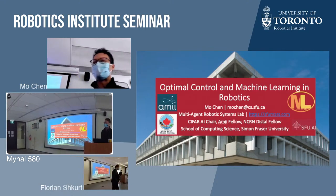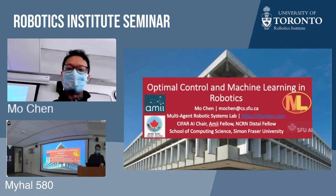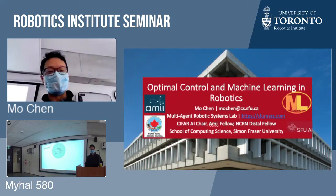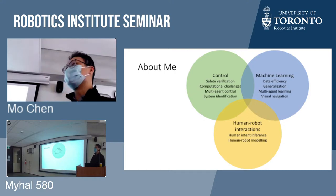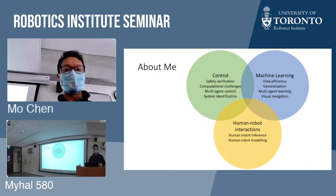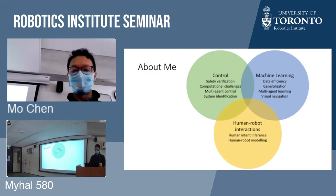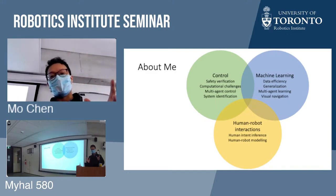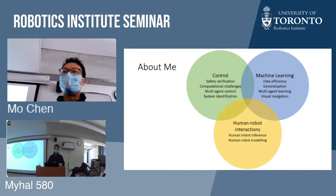Thanks so much Florian for that introduction. I'll skip further introductions and talk a bit about the scope of work we do at the MARS lab. We work a lot on control — safety verification, so how can we guarantee that robots will behave safely under certain assumptions — with a focus on computational challenges. We also do multi-agent control and system identification. Drawing a Venn diagram to imply overlap, we also work on machine learning: reinforcement learning, looking at problems of data efficiency, generalization, multi-agent learning, and visual navigation — often using control to improve these aspects of learning.